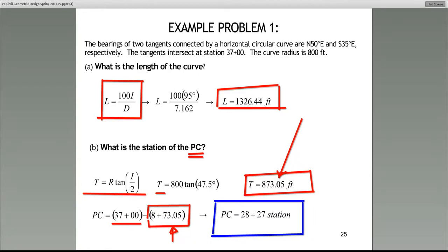Stephen asks, is the PI an imaginary station? Well, it's not so much imaginary, but it is not on the curve. We use it as a reference point. Shanna is asking, where does 47.5 come from? 47.5 is I over 2. The intersection angle is 95 degrees, so I over 2 is half of 95.